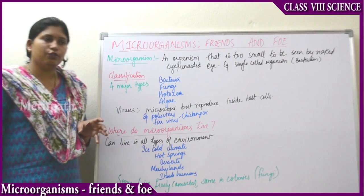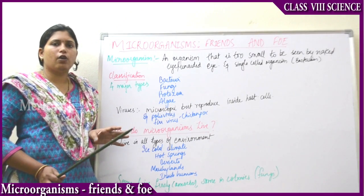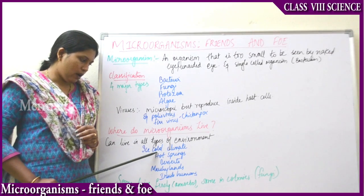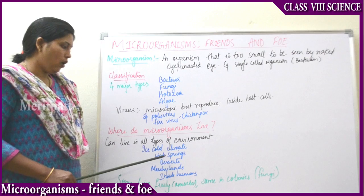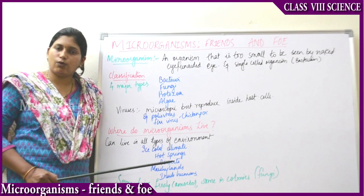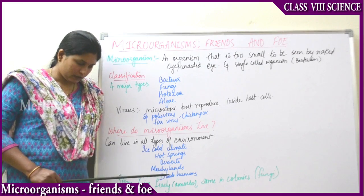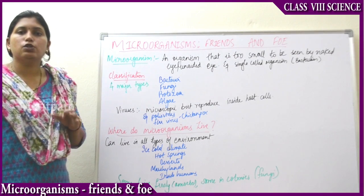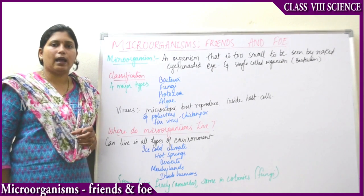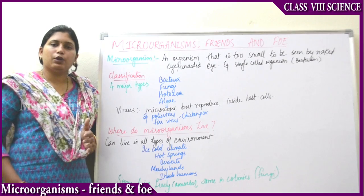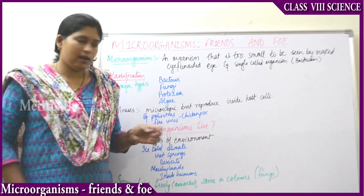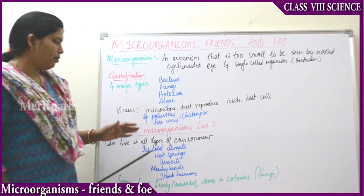Where do microorganisms actually live? They can live in all types of environments. Their bodies are so well adapted that they can survive any conditions — extreme ice-cold climates with snow, hot springs, desert areas with heat and less water, marshy lands, and even inside the human body. Sometimes they live freely; for example, amoeba is a unicellular organism that lives freely. Some microorganisms live in colonies, that is, together in groups — examples include fungi and algae.